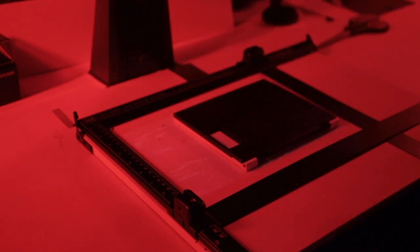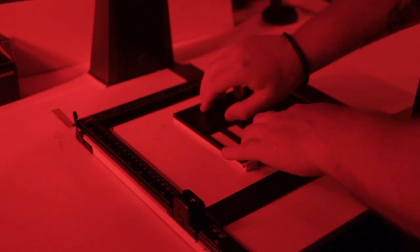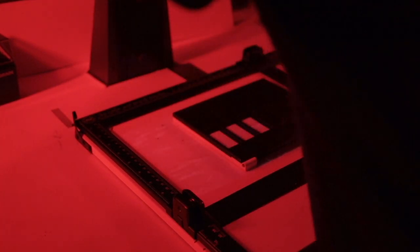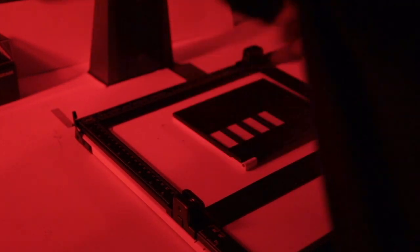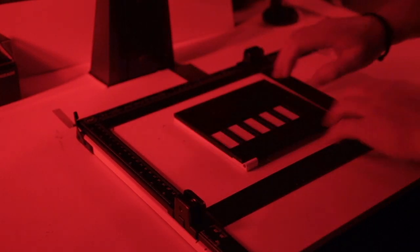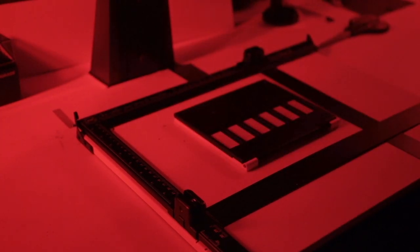I've got the aperture set to 5.6. I'll just do increments of two seconds. Two, four, six, eight, ten, one more, twelve. So twelve seconds in total. Test strip into the developer.